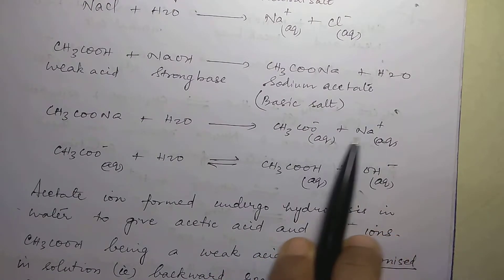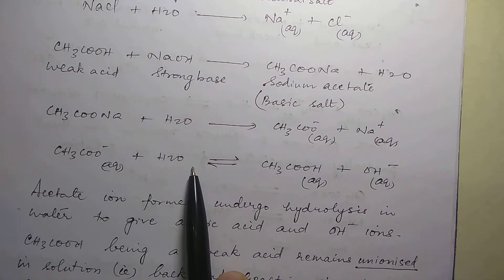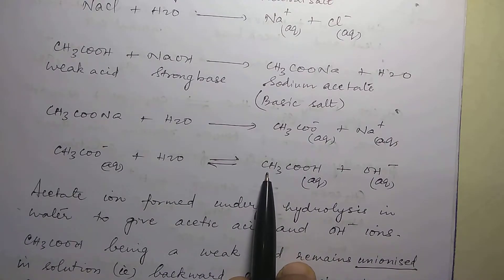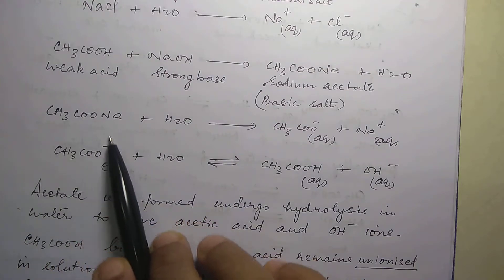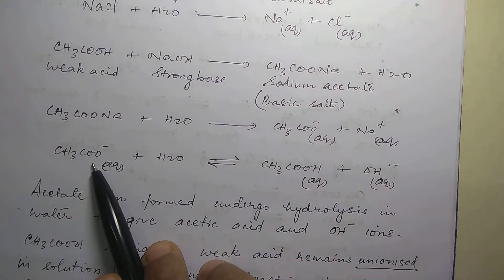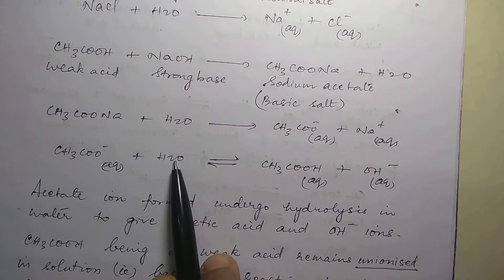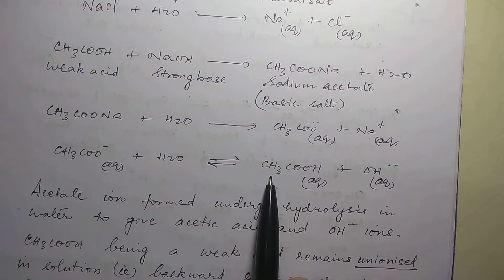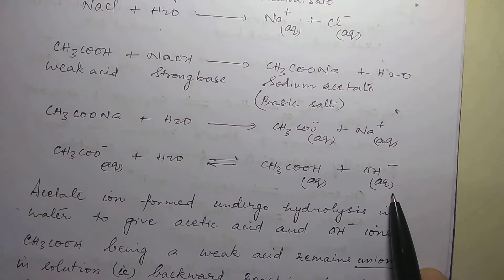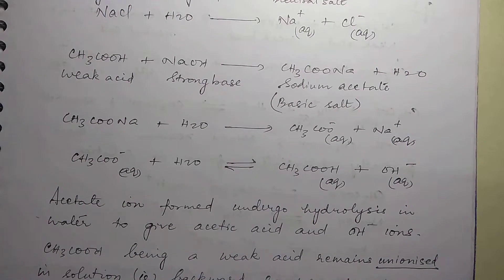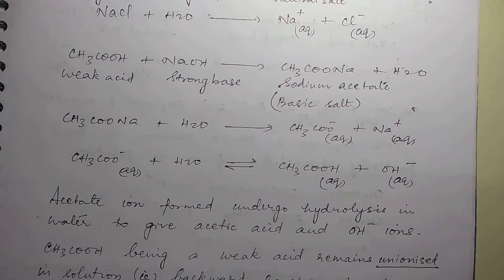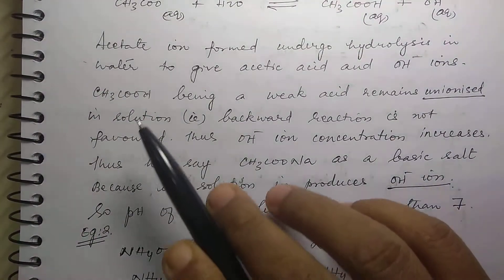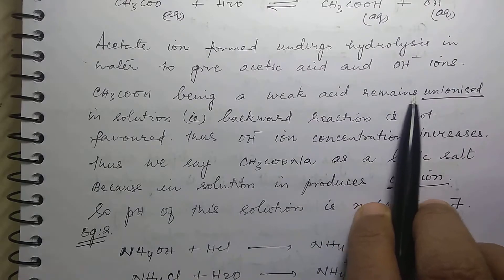The acetate ion and Na⁺ are formed. Now, the acetate ion reacts with water. Being surrounded by water, it reacts to give you acetic acid and OH⁻. Acetate ion is the conjugate base of acetic acid — it accepts a proton from water, becoming acetic acid, while water is left with OH⁻. This is hydrolysis. Acetic acid, being a weak acid, remains unionized in solution.